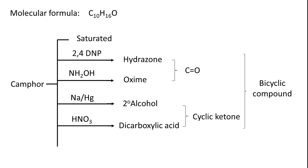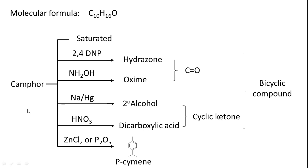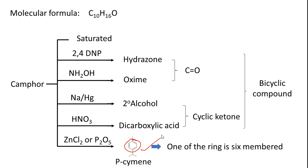Now we need to know the size of each ring in the bicyclic structure. When camphor was treated with zinc chloride or phosphorous pentoxide (P2O5), it yielded cymene along with other degraded products. Cymene contains a benzene ring, and this indicates that one of the rings in camphor is actually a six-membered ring.